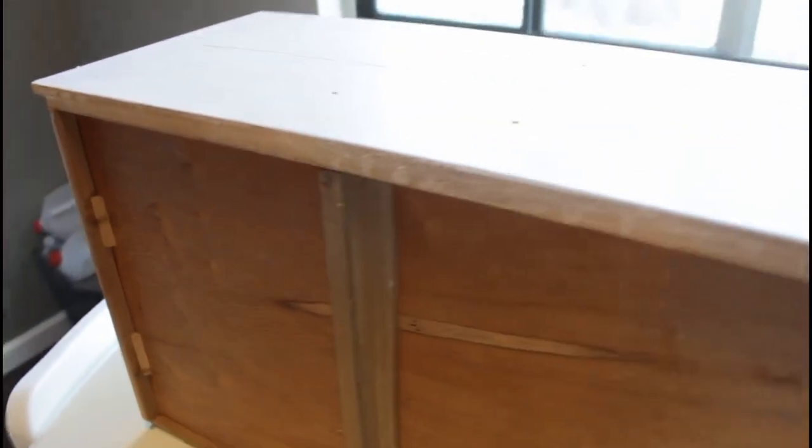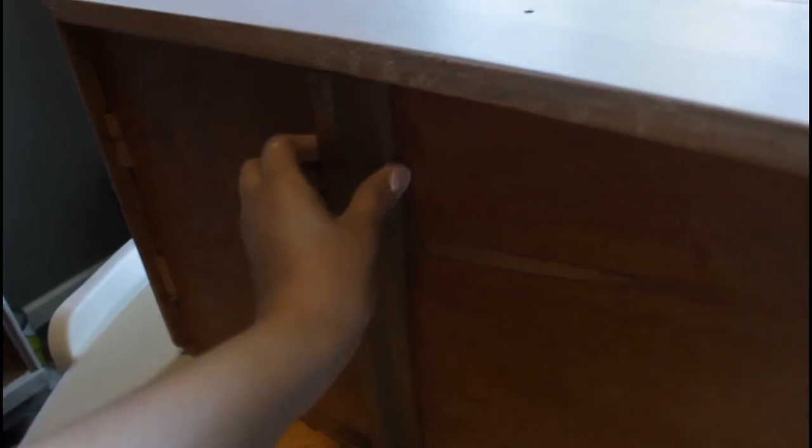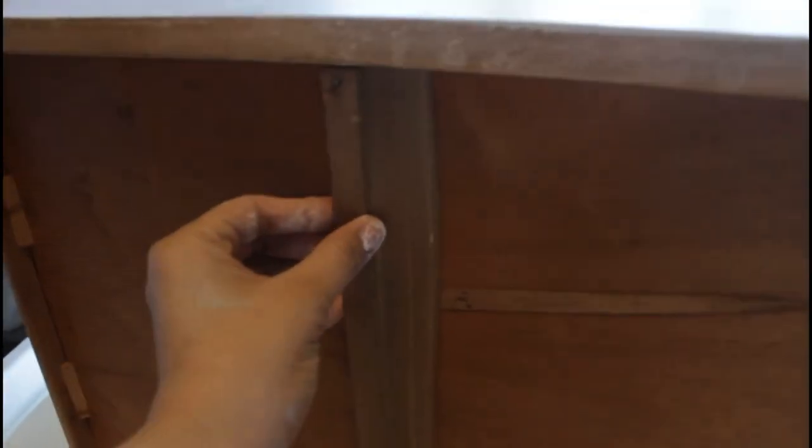Another problem that I found while working on this dresser was that one of the drawer slides was broken. It was missing a piece of wood on the right side, as you can see here. So I added another piece of wood and cut it to fit the size of the drawer, and it worked perfectly.